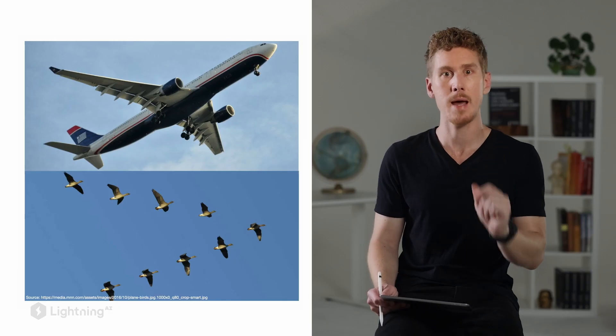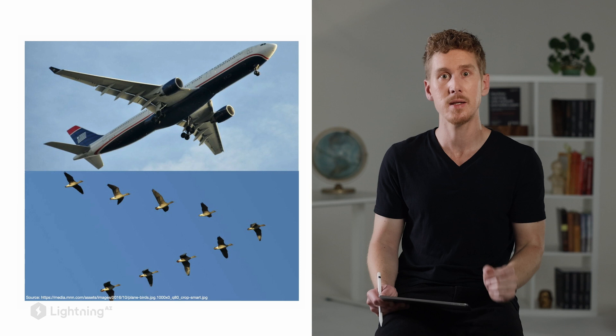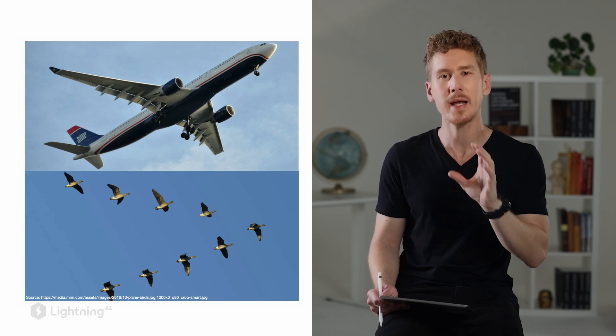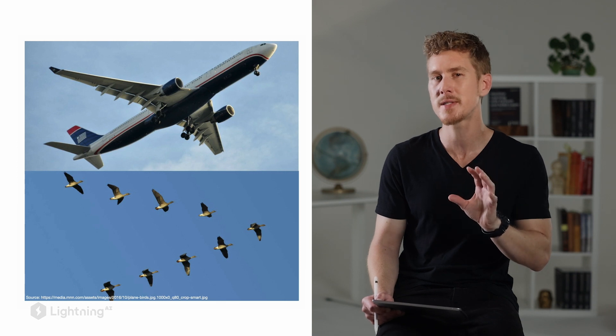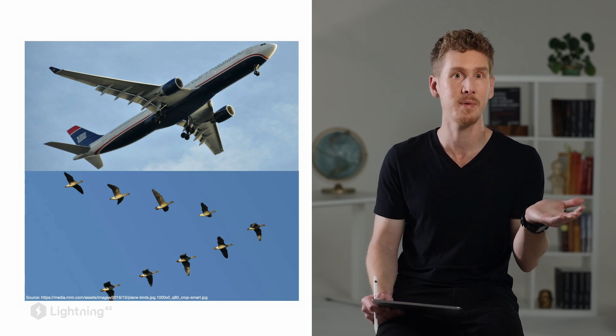For example, consider airplanes. When people invented airplanes, they didn't exactly mimic how birds fly. So airplanes, in a sense, are inspired by birds, but they don't flap their wings, for example, and they still fly. And in the same sense, machine learning algorithms are inspired by how the human brain works. But in order to make successful predictions, you don't have to mimic it exactly.